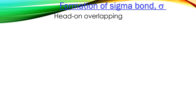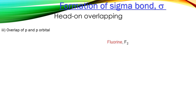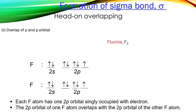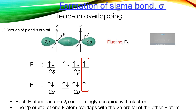The third head-on overlapping is between p-orbitals and p-orbitals. For example, in the formation of a fluorine molecule, each fluorine atom has one 2p orbital singly occupied with an electron. The 2p orbital of one fluorine atom overlaps with the 2p orbital of the other fluorine atom, and as a result, a sigma bond is formed.